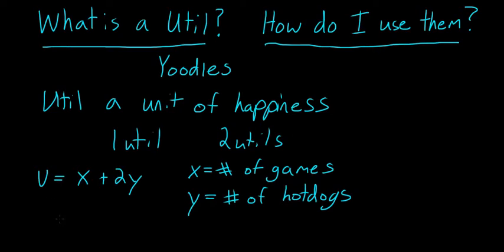Now, the reason that matters is because it allows me to compare bundles. So, if I was trying to choose between getting to play five games and eat two hot dogs, or getting one game and three hot dogs, my utility function would allow me to pick which one would be better for this person. In this case, me.